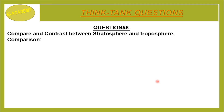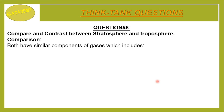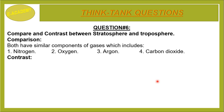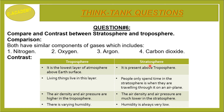Question number 6: Compare and contrast between the stratosphere and the troposphere. Comparison: Both have similar components of gases which include nitrogen, oxygen, argon, and carbon dioxide. These are the lowest layers of the atmosphere above the Earth's surface. The troposphere is the lowest layer, while the stratosphere is present above the troposphere. Living things live in the troposphere, and when we travel on a plane, we spend our time in the stratosphere. Air density and air pressure are high in the troposphere, and very low in the stratosphere. There is varying humidity in the troposphere, whereas in the stratosphere humidity is always very low.